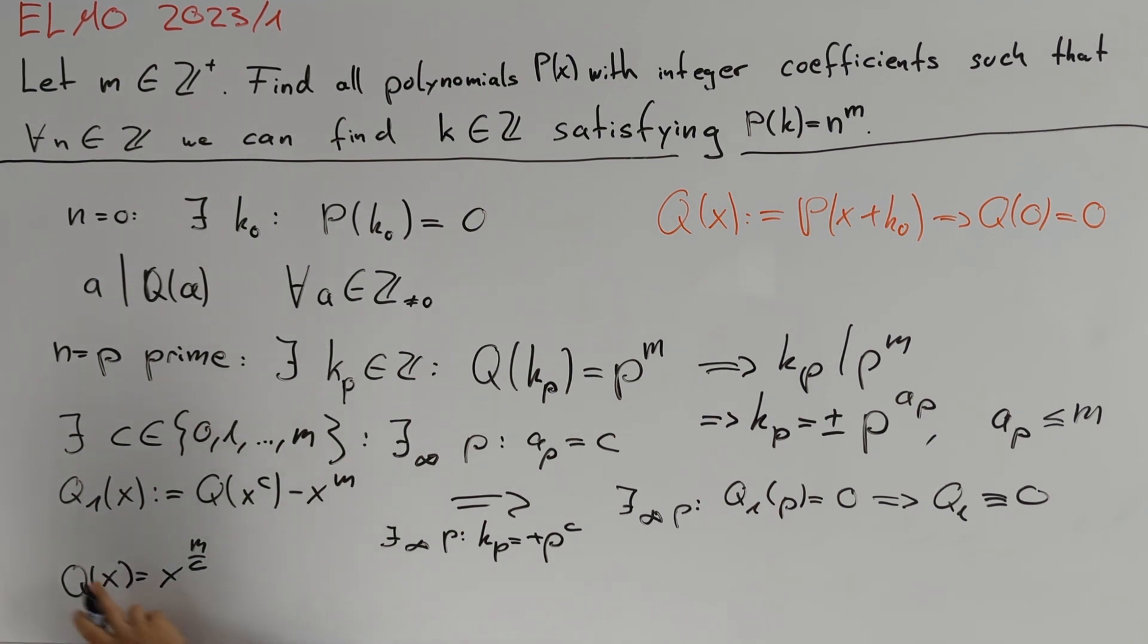Otherwise we can define the polynomial Q₂(x) to be equal to Q(-x)^c minus x to the power of m. And then we get that Q(x) equals minus x to the power of m divided by c.